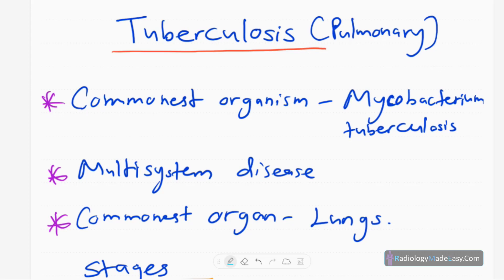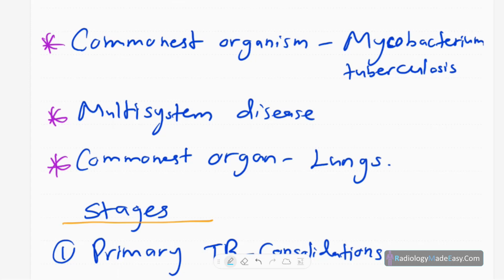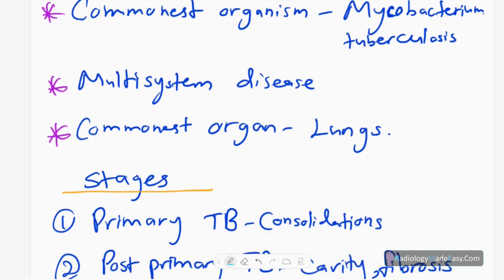I'm going to make a video on pulmonary TB mainly. It can affect any system — the commonest organism is Mycobacterium tuberculosis. It's a multi-system disease and can affect any organ in the body. The commonest organ is the lungs, that is called pulmonary TB. Extra-pulmonary TB can affect the cardiovascular system, brain, spine, central nervous system, joints, urinary system, and gastrointestinal system.